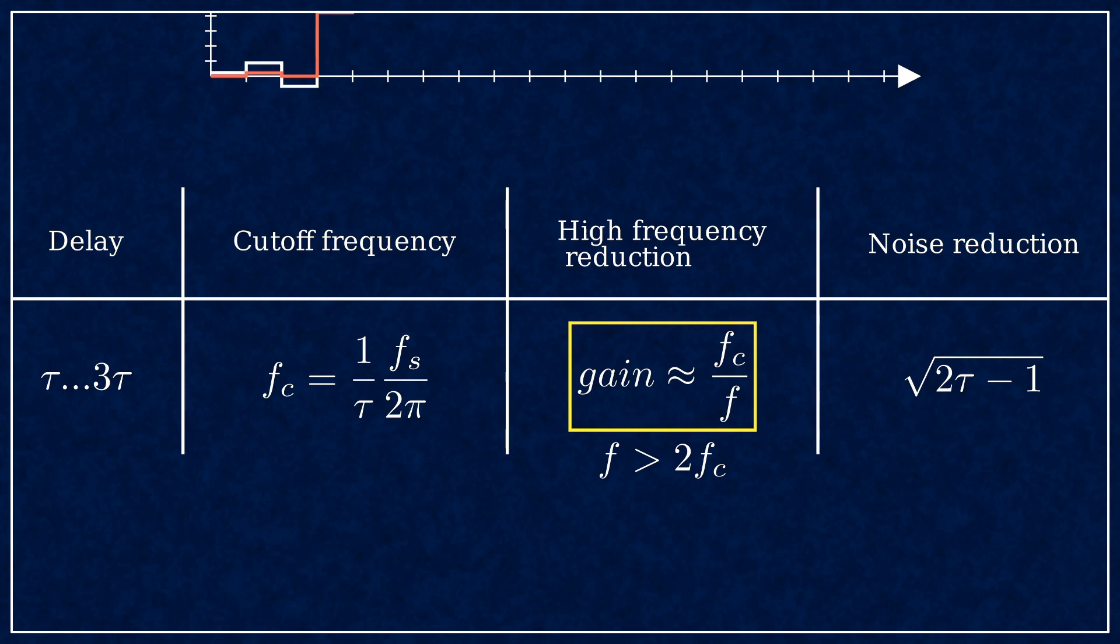So a sine wave at 10 times the cutoff frequency will be reduced to 1 tenth amplitude. The noise reduction, assuming white noise input, is square root 2τ-1. That's about all you need to know, really. The rest of this video is just more detail about these.